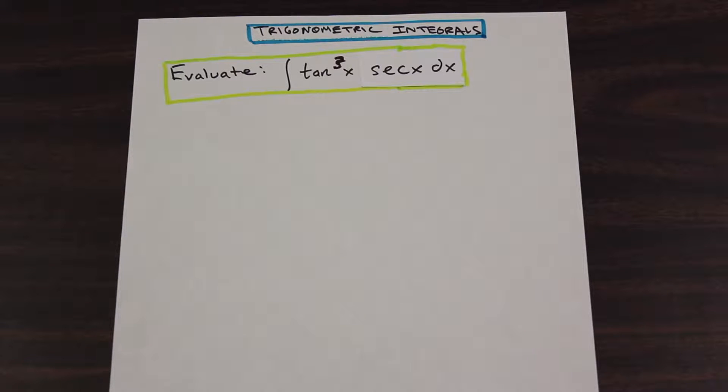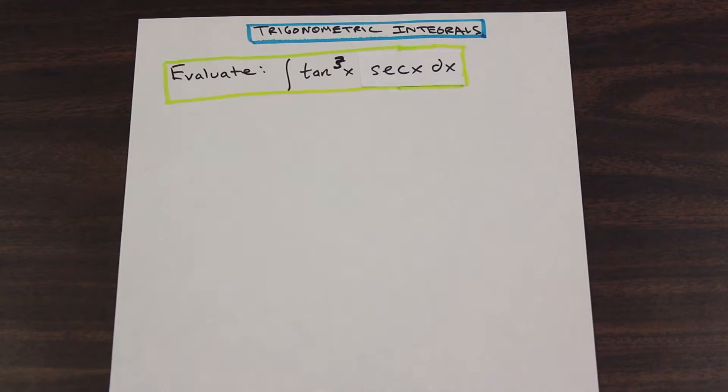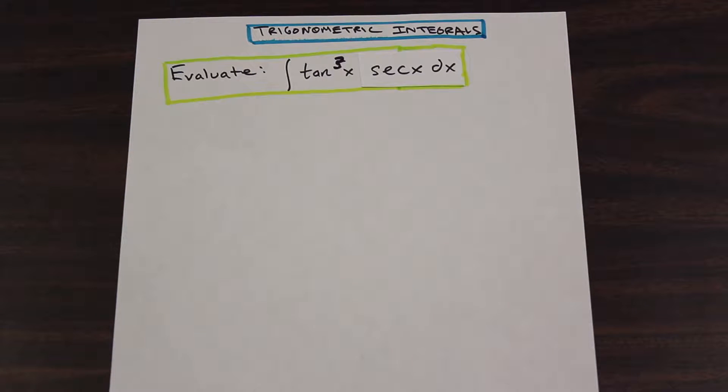In this particular question, we have an odd function of tan multiplied by an odd function of secant, an odd power. So in this case what we're going to want to do is factor out a tan secant x from the problem, and then we're going to be left with an even function of tan.